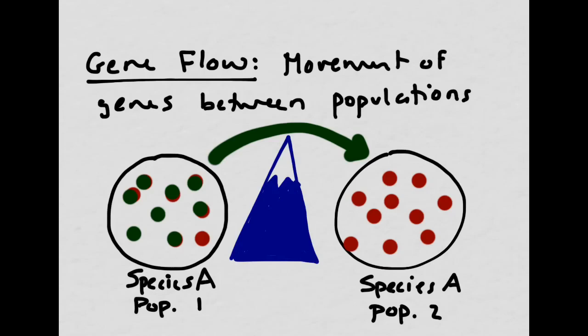Depending on whether the green mutation is also advantageous in that other area, you might see a change in the number of green organisms there too. You might only start with one or two, but if it's an advantageous mutation there as well, you'd see more green ones breeding. Because this area originally didn't have great gene flow due to the mountain barrier, you wouldn't see green organisms popping up in population 2 unless there was some abnormal event.